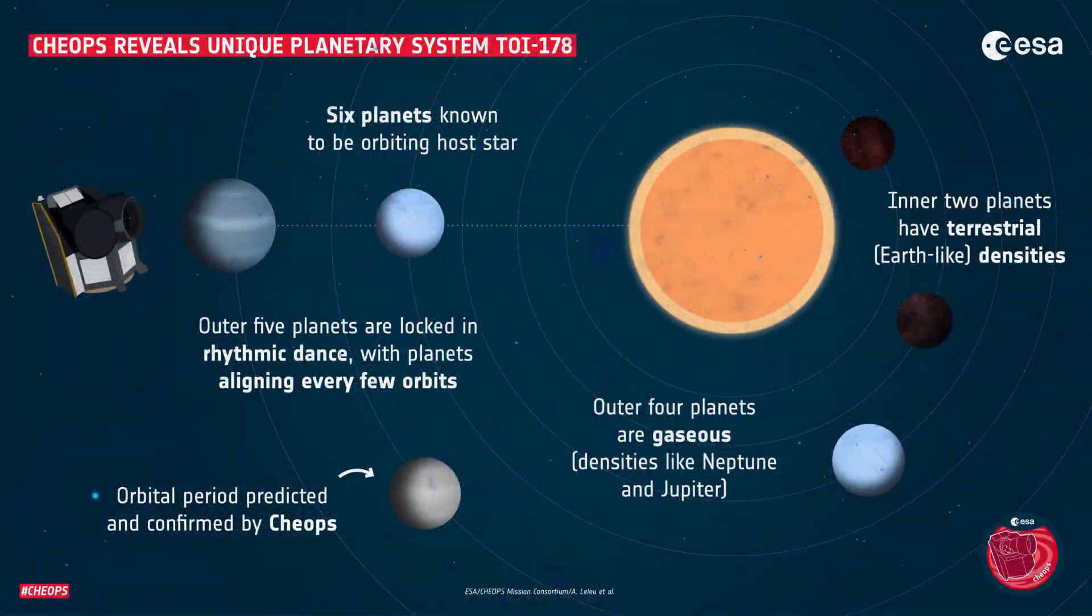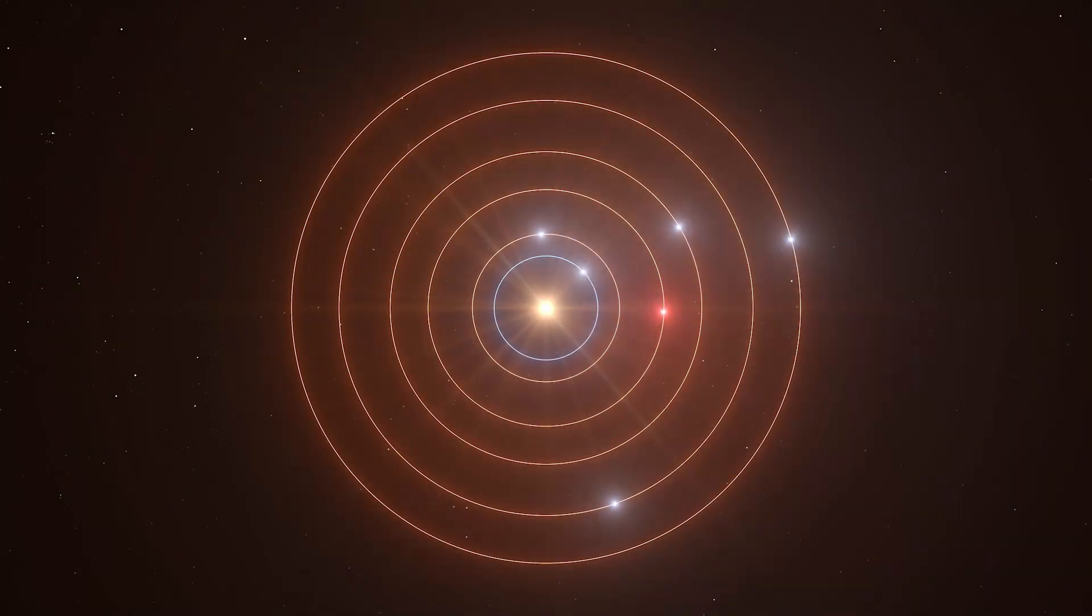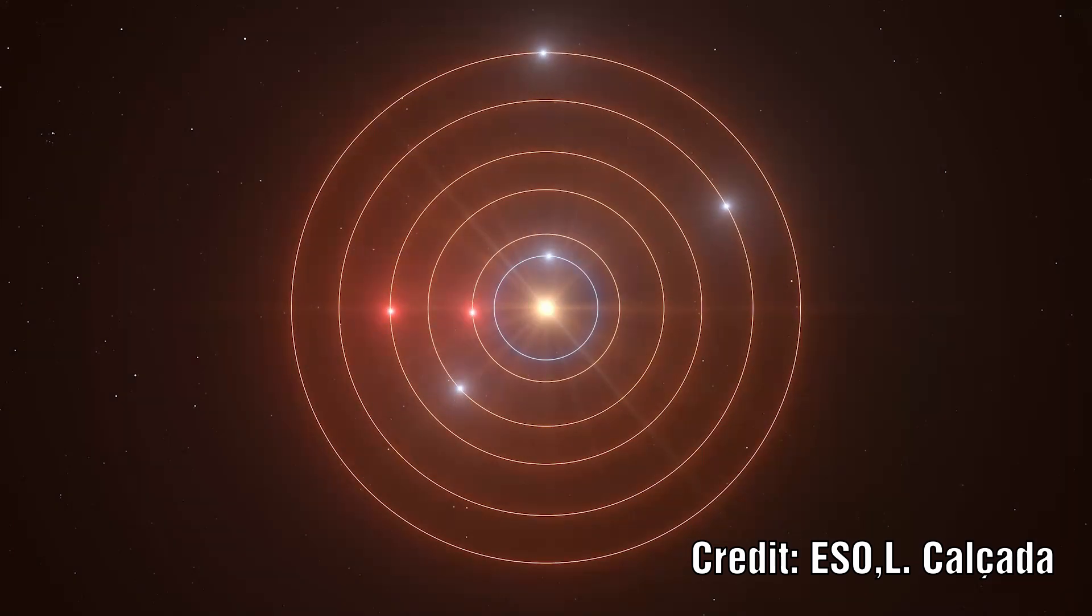The system contains a very orderly set of planets, but they appear to have a disordered set of densities. Five of the six planets orbit the star in a rare rhythmic dance called a resonance chain. What is strange about the system is how mixed up the planet types are.